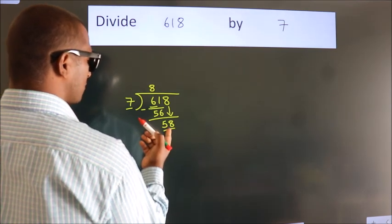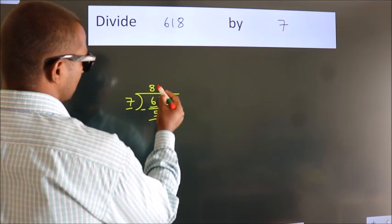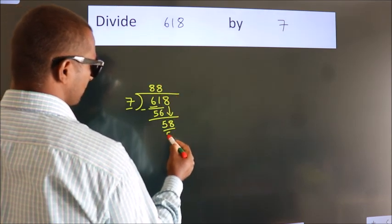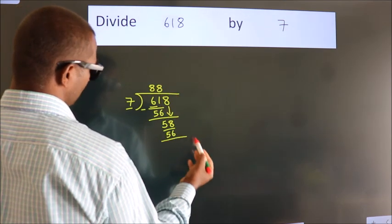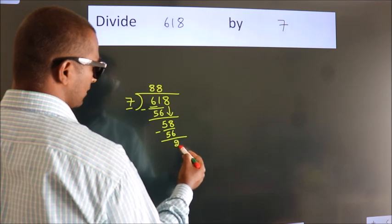A number close to 58 in 7 table is 7 times 8, 56. Now we subtract. We get 2.